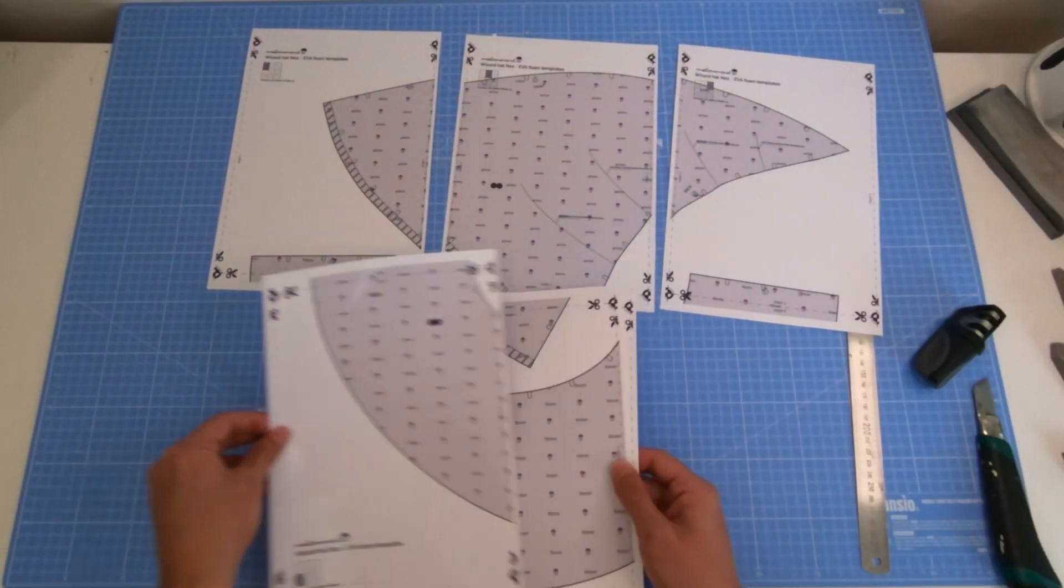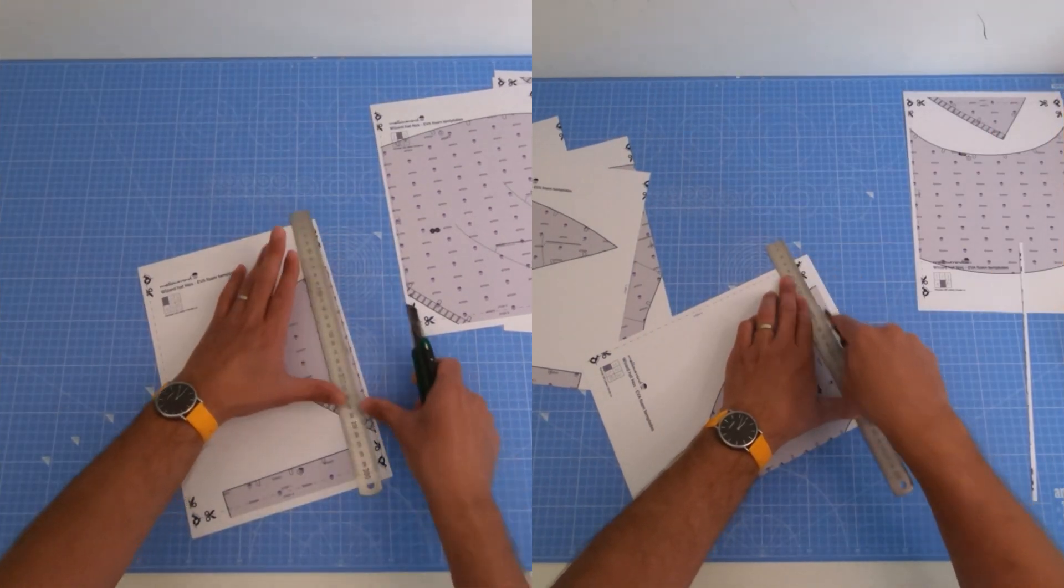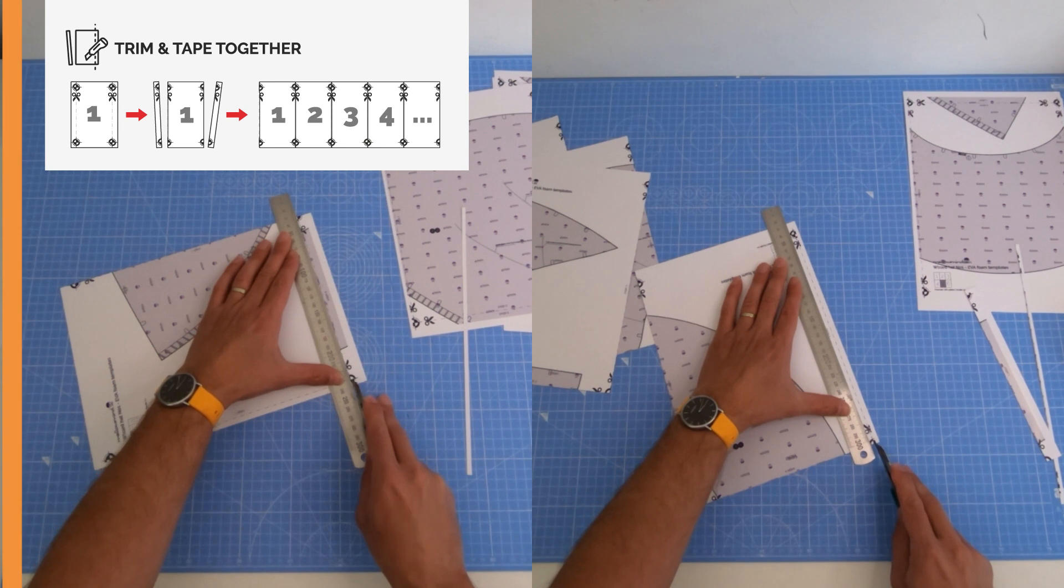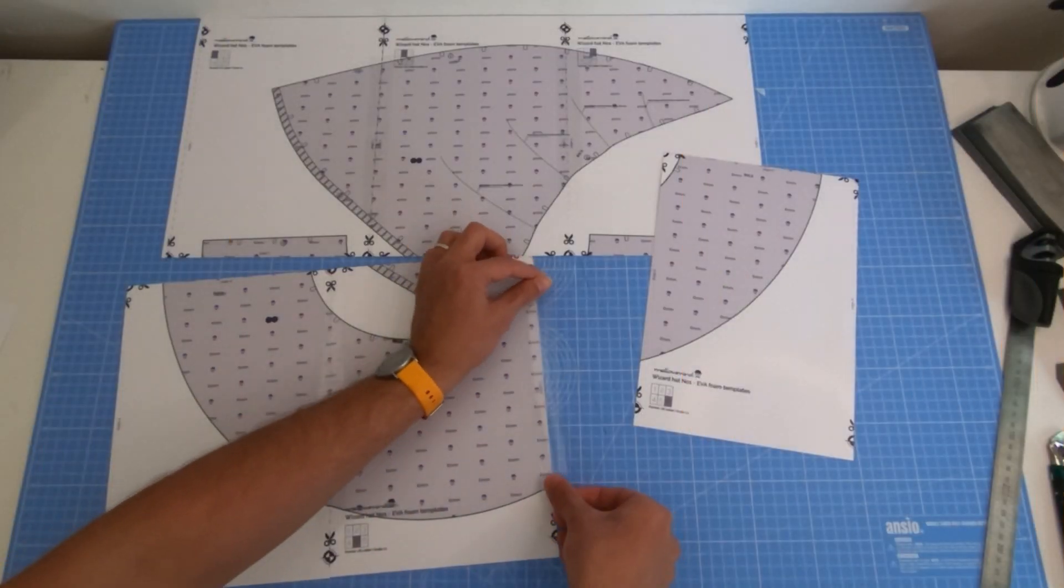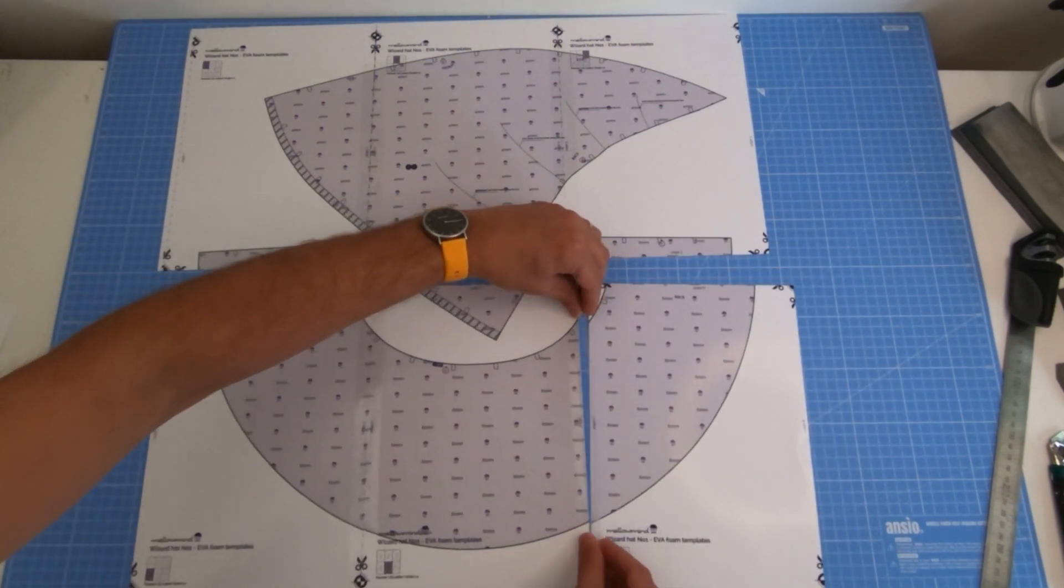Arrange all the pattern pages first to see how they all fit together. Now each page needs to be trimmed along the edges, just look for the dash lines with a scissor icon. Sellotape all pages together to make one large canvas, the corner circles from each page will help you tape everything evenly.